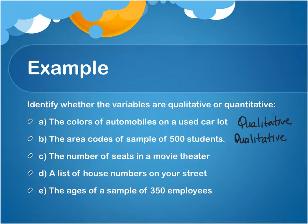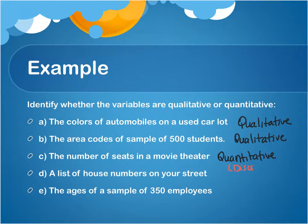The number of seats in the movie theater. Can you count the number of seats in the movie theater? Yes. The next thing to ask yourself is: can you have fractional seats? Because if you can have fractional seats, that means you can measure it and it's continuous. But can we have a fractional seat? No — it's either a seat or it's not a seat. So this is going to be a quantitative variable, and this is what we call a discrete variable because it's countable.